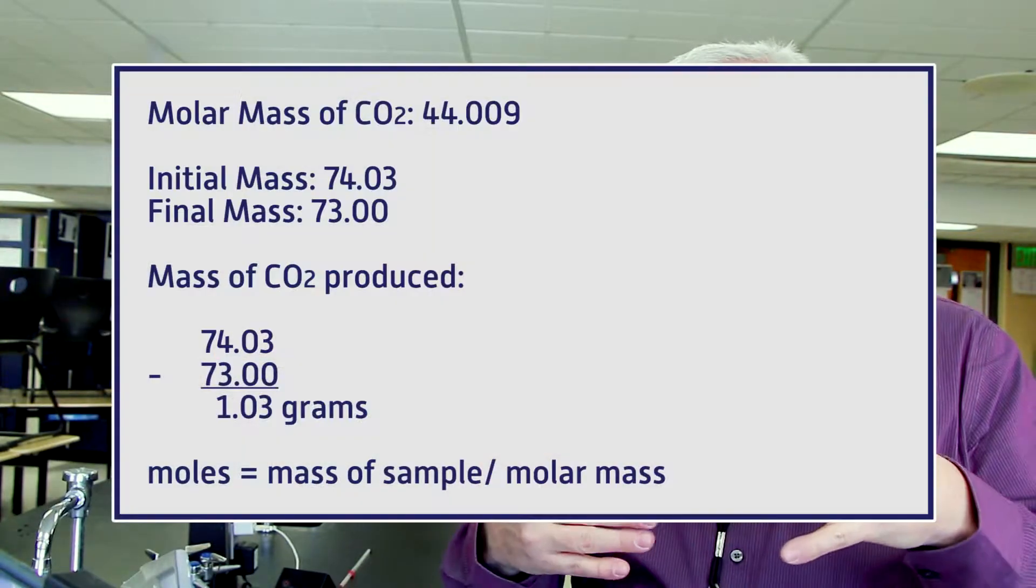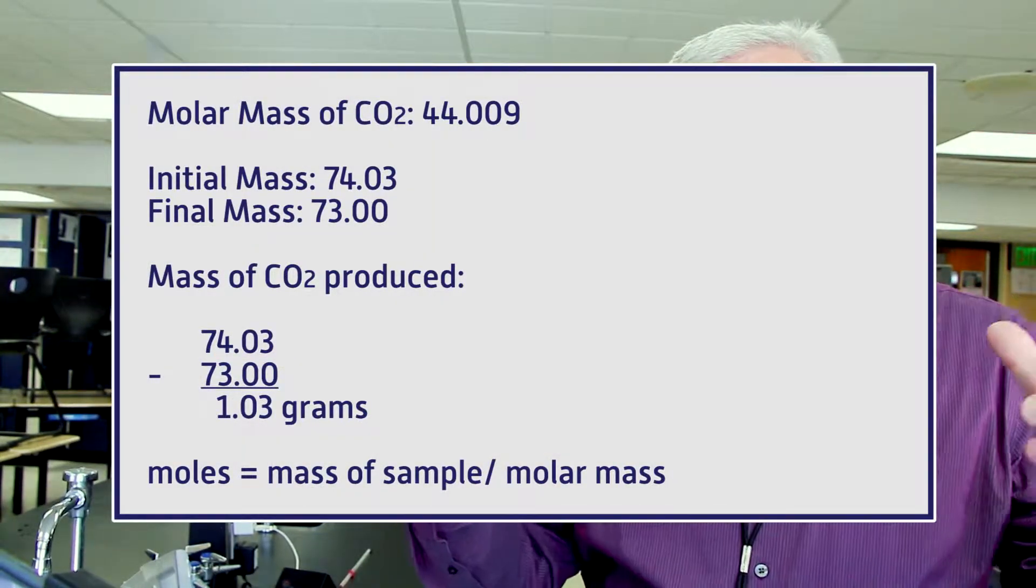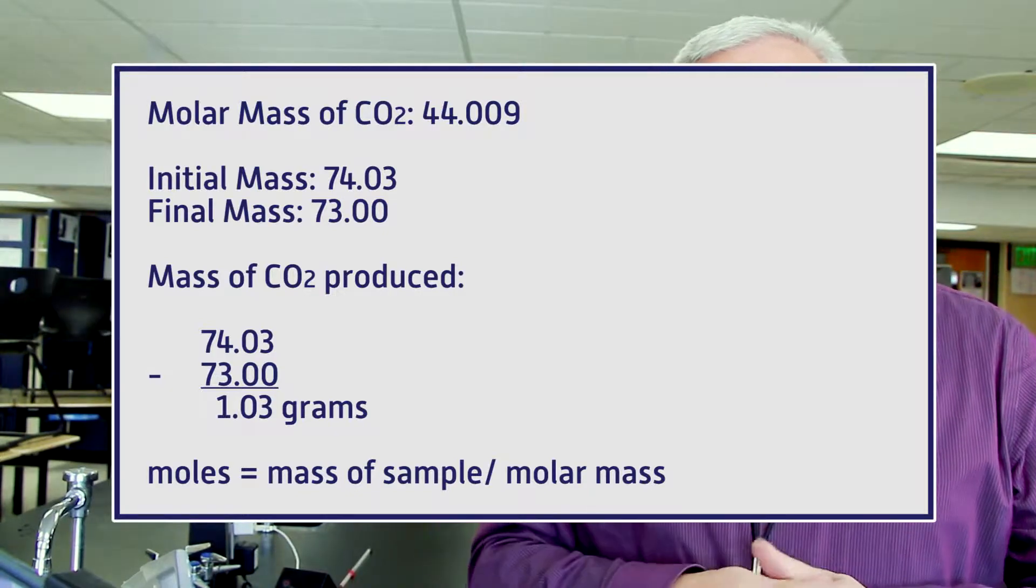So in conclusion, to find the number of moles of any substance, we take the mass of the substance and divide it by the mass of one mole. The mass of one mole can be found by adding the atomic weights of all of the elements in that compound. So for carbon dioxide, we add them together and we get 44.009. We use that number as our mass of one mole, take the mass that was produced, and that will be the number of moles.